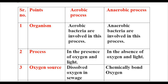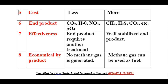Now let's distinguish between aerobic and anaerobic processes. Regarding organisms: aerobic bacteria are involved in the aerobic process, while anaerobic bacteria are involved in the anaerobic process. Regarding the process: aerobic process takes place in the presence of oxygen and light, whereas anaerobic process takes place in the absence of oxygen and light. Regarding oxygen source: in aerobic process, oxygen is dissolved in sewage; in anaerobic process, it is chemically bonded oxygen. Regarding cost: the cost of aerobic process is less, whereas the cost of anaerobic process is more.